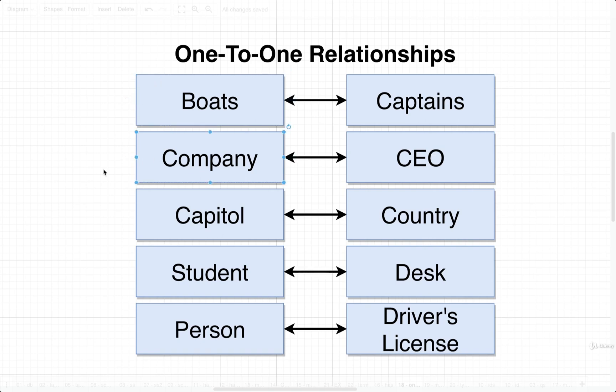Likewise, a company might have only one CEO at a given time, and a CEO might only be the CEO for one single company. I'm sure you could think of exceptions to this — there are definitely companies out there that have multiple different CEOs, and maybe a given CEO works for many different companies. But just for the purposes of this discussion, we can assume that a company has one CEO, and a CEO has one company.